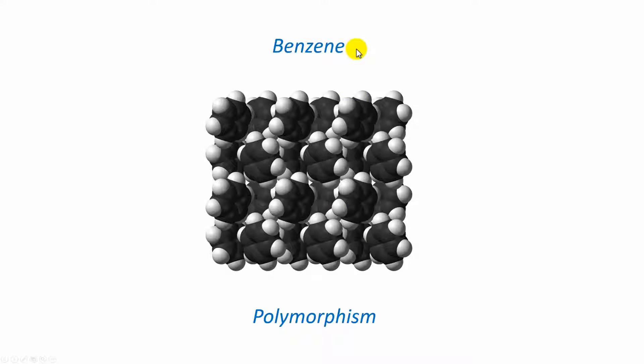We will have a look at benzene. The crystal structure is shown here in space-filling representation, and we will scratch a topic called polymorphism, the fact that one and the same compound can realize different crystal structures.